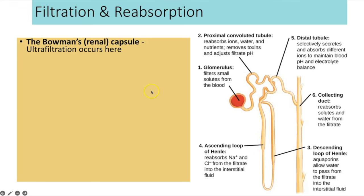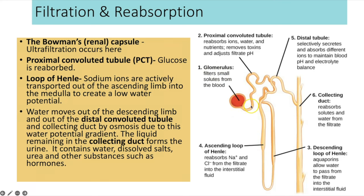That forms the glomerular filtrate. The filtrate then passes through the proximal convoluted tubule, where glucose is reabsorbed and some water is also reabsorbed. The filtrate then moves down the descending loop of Henle and back up the ascending loop of Henle, where sodium ions are actively transported out and lots of water moves out by osmosis. The filtrate then moves through the distal convoluted tubule and the collecting duct, where even more water is reabsorbed back into the blood.